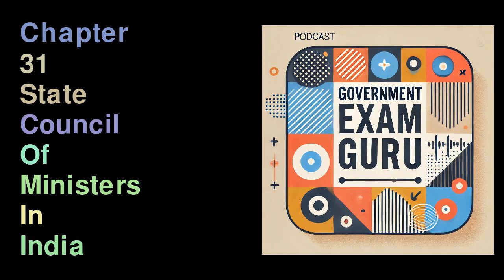Article 167 outlines the responsibilities of the Chief Minister. It is the Chief Minister's duty to inform the governor about all decisions made by the Council of Ministers regarding state administration. The Chief Minister must also provide any information related to administration and legislative proposals when the governor requests it. If the governor asks, the Chief Minister is responsible for presenting any issues decided by a minister that have not been discussed by the entire Council.